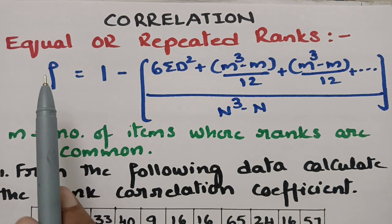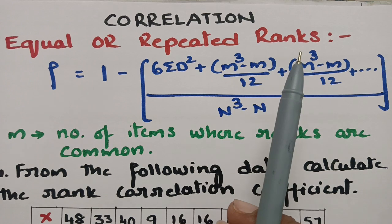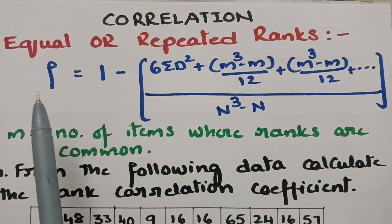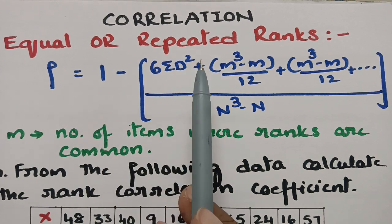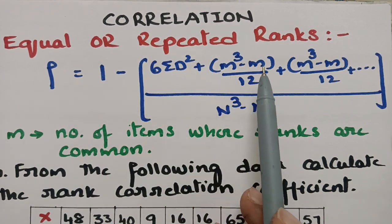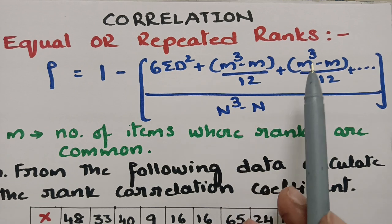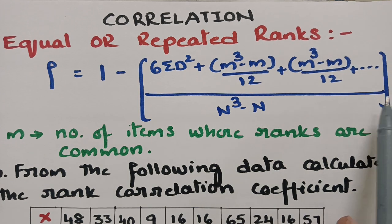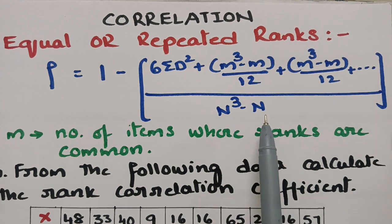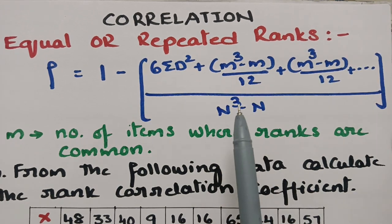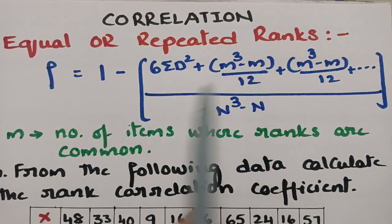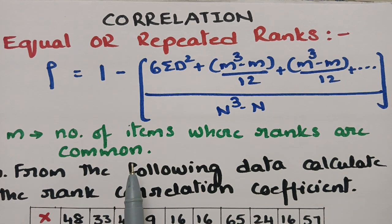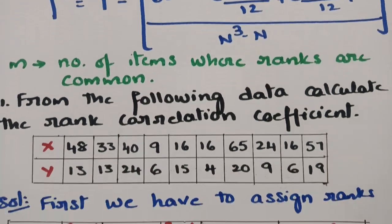When the ranks are equal or we get repeated ranks, then according to the Spearman rank correlation coefficient, rho is equal to 1 minus 6 times of sigma d² plus (m³ minus m)/12 plus (m³ minus m)/12 and so on, divided by n³ minus n. Where small m is equal to the number of items where the ranks are common.